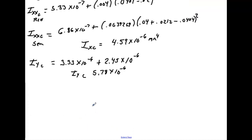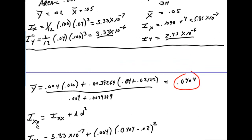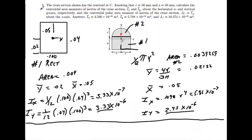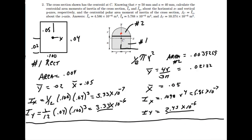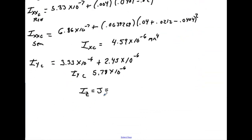Now to get your polar moment inertia, or Iz, which is equal to j, you just add these two values together. When you add those two values together, you will get exactly what the answer is, 10.374 times 10 to the minus 6 within rounding. These are all meters to the fourth.